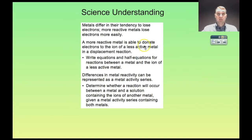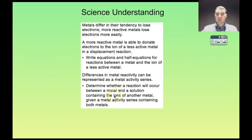So the science understandings we're going to cover: metals differ in their tendency to lose electrons. More reactive metals lose their electrons more easily. More reactive metals donate their electrons to ions of less active metals in displacement reactions, and we're going to write the equations for those. Differences in metal activity can be represented by a metal activity series, and then determine whether a reaction will occur given a metal activity series.